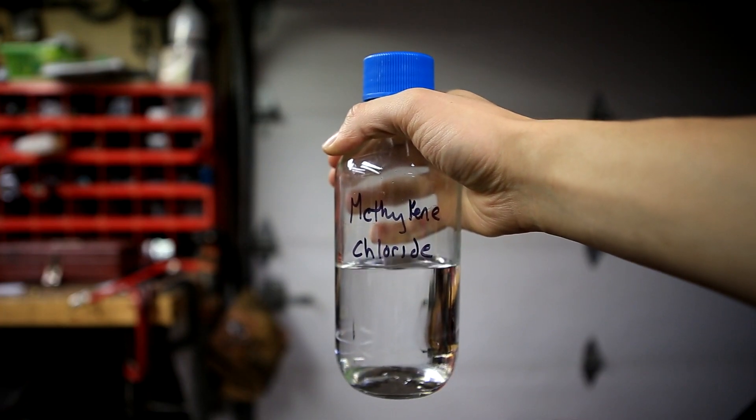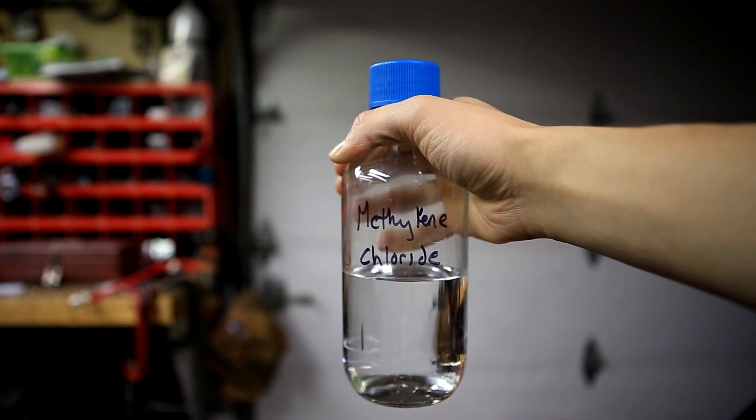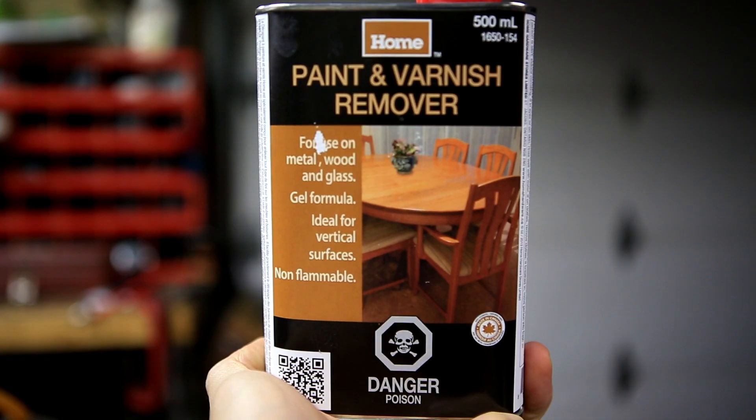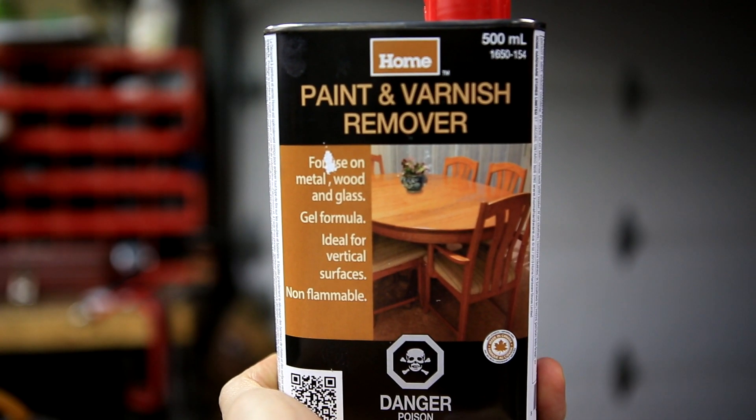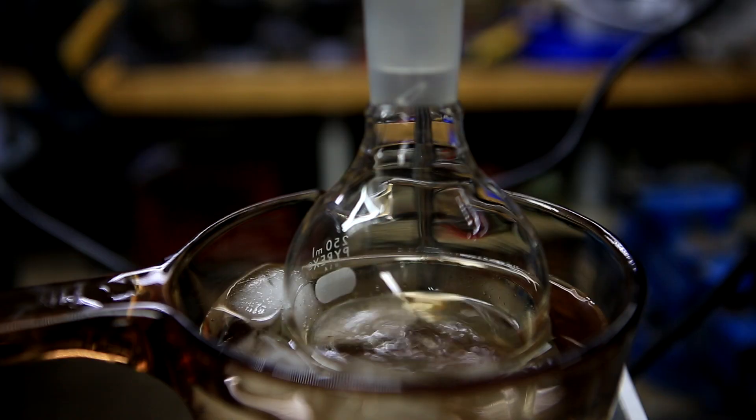Methylene chloride, or dichloromethane or DCM, is a very useful organic solvent. It is not commonly available for purchase, but it can be easily separated from paint stripper. In a future video, I will use this methylene chloride to separate caffeine from tea.